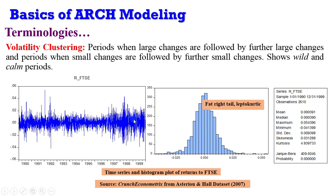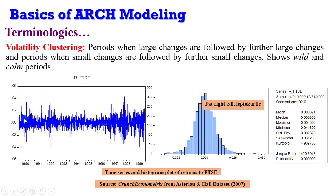This returns on the FTSE evidences volatility clustering over the time period being examined. Looking at the distribution, we can see that it is leptokurtic. This is an E-Views output. The tails on the right are fat. Looking at the kurtosis, it's 4.9 and skewness is 0.03. The Jarque-Bera p-value shows that this is a non-normal distribution — it is not normally distributed. This explains volatility clustering, where large changes are followed by further large changes, and small changes followed by further small changes.